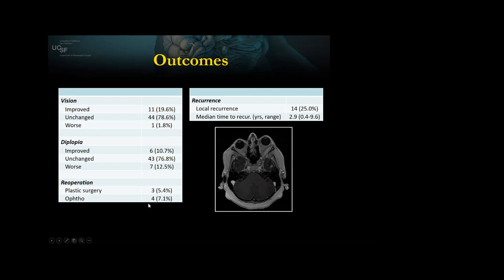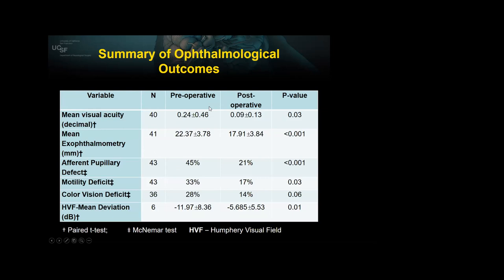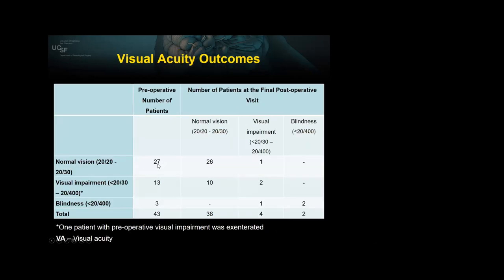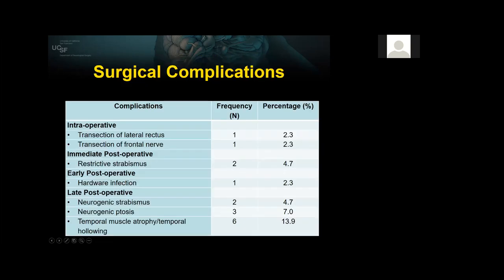Three re-operations were for plastic surgical issues and four for orbital problems — the two entrapments mentioned and some other procedures. The summary of ophthalmologic outcomes shows visual acuity, proptosis index, afferent pupillary defects were improved. Proptosis significantly improved. Not much change in color vision because of nerve fiber loss. The Humphrey visual field results improved as well. For patients with normal vision (20/20) pre-op, only one patient had impairment post-op. There were three patients blind in that eye, of whom one had some minor recovery. If a patient has no light perception pre-op or less than 20/400, they're not going to get better even with re-operation.